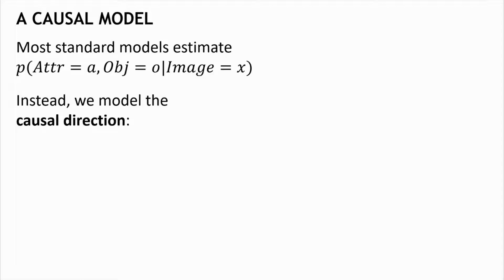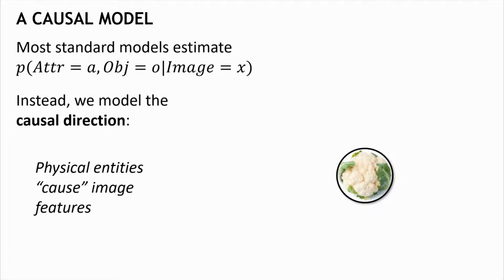So what is the causal mechanism that generates images in the world? You can think that this image is actually a recording of something that happened in real life. There are some physical whiteness and cauliflower-ness in the world that cause this image. We can look at the distribution of the image x conditioned on these factors, and this direction of the arrows captures the underlying physical mechanism, which is much more stable from training to test time, because it captures some real dependency in the world rather than depending on the statistics of the dataset.